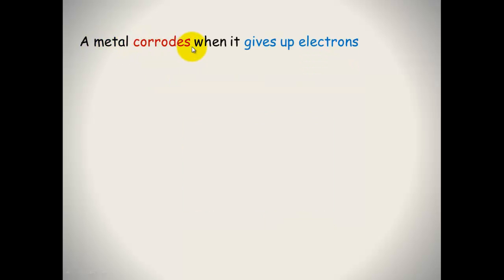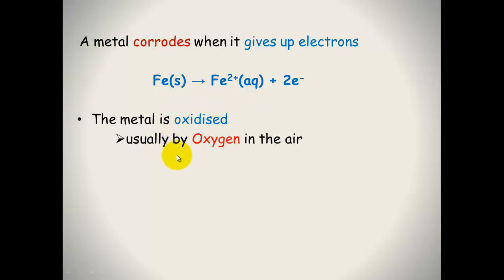A metal corrodes when it gives up electrons. So you'll see here, iron will become iron two plus ions, plus two electrons. The metal is said to be oxidized. Remember, oxidation is loss of electrons. And this usually occurs by oxygen in the air.